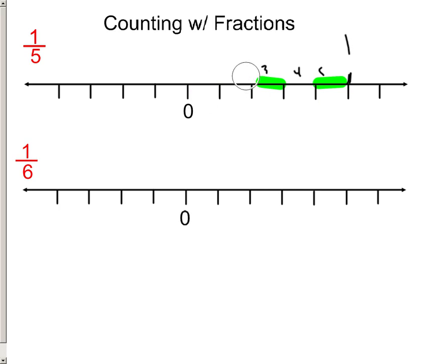Let's just erase this, count by fifths, and see if we get there. All right, let's see, zero-fifths, one-fifths, two-fifths, three-fifths, four-fifths, and five-fifths. There we go. Five over five is one.